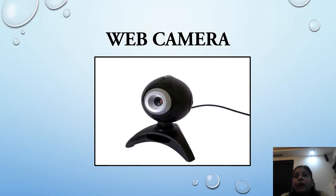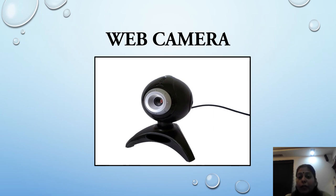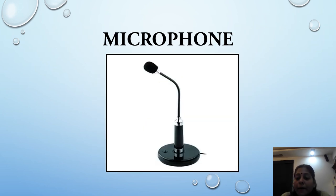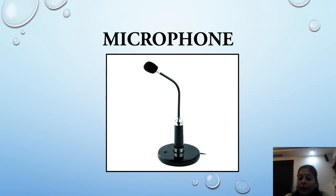The seventh input device is web camera. A webcam is a video input device used to digitize images or video from the outside world. It captures video into the computer in live. The next input device is microphone. A microphone is an input device which is used to record voice, music, and sound into the computer system.